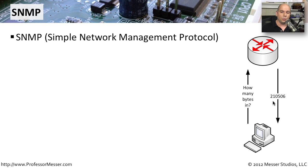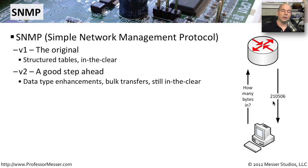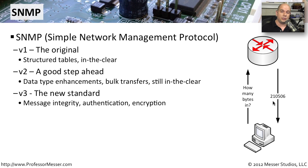There are different versions of SNMP. Version 1 is the original — it used structured tables, but everything was sent in the clear with no encryption, so anyone on the network could see those statistics. Version 2 added enhancements allowing you to ask for a lot of information at once rather than single queries and responses, but was still sent in the clear. That's why most people these days use SNMP version 3, which includes message integrity so you can be assured that what you receive is what was sent, along with authentication and encryption so nobody else can see these important infrastructure statistics.